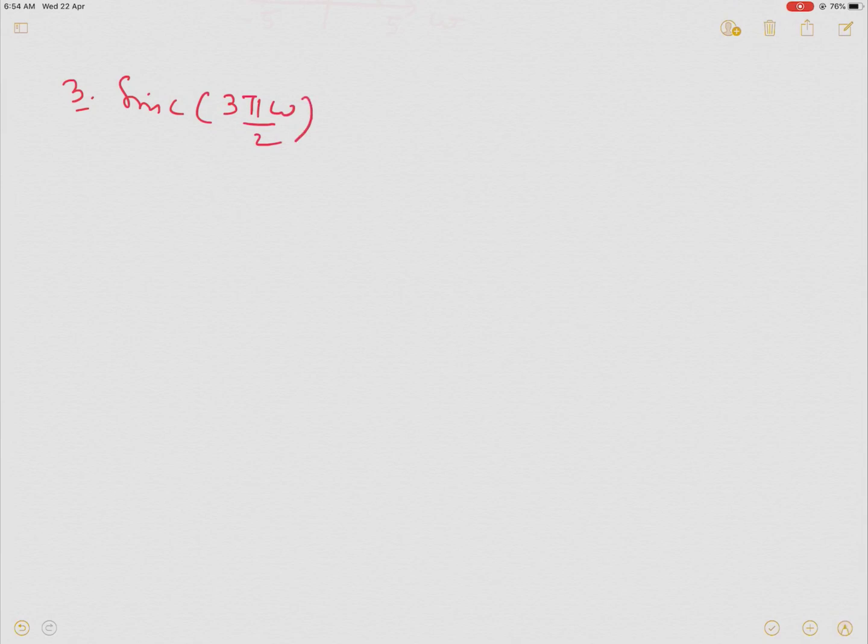Value of this function, we know value of this function is 0 when this argument is equal to plus minus n of pi. n can take values 1, 2, 3, 4, so on. So, omega is pi will be cancelled out, omega is plus minus n 2 by 3.